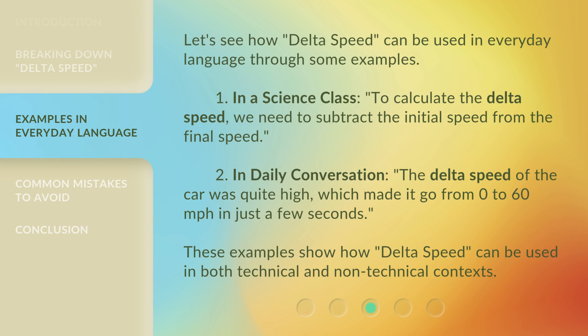Let's see how Delta Speed can be used in everyday language through some examples. In a science class: 'To calculate the Delta Speed, we need to subtract the initial speed from the final speed.' In daily conversation: 'The Delta Speed of the car was quite high, which made it go from 0 to 60 miles per hour in just a few seconds.' These examples show how Delta Speed can be used in both technical and non-technical contexts.